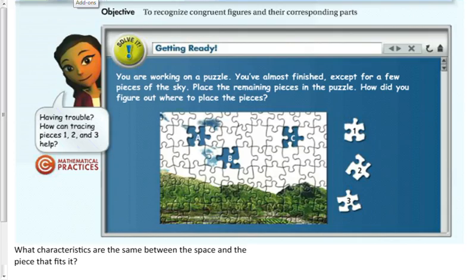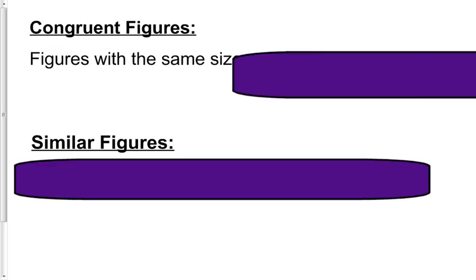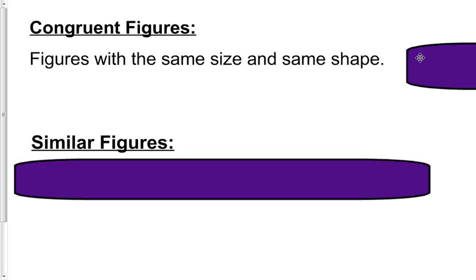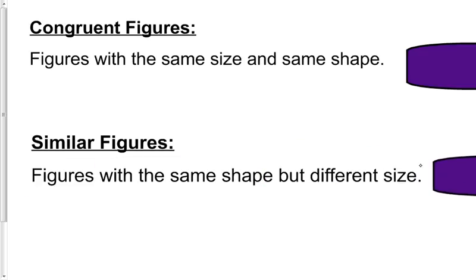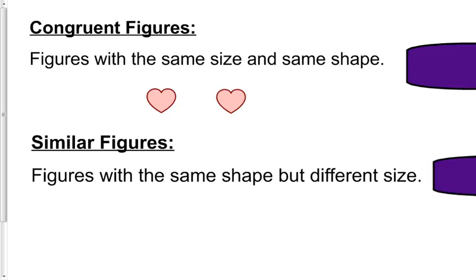What are congruent figures? Congruent figures are exactly the same size and shape. Similar figures have the same shape but a different size. To give a visual example — if I were to clone this heart, they are congruent because they're exactly the same size and exactly the same shape.